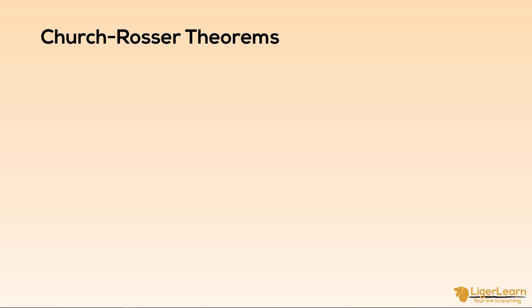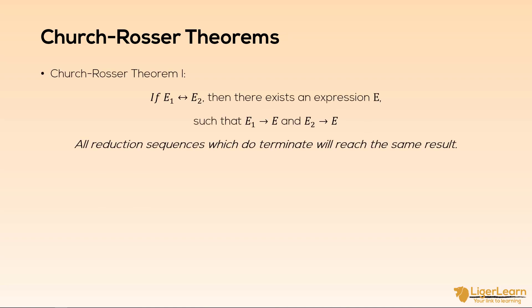There are two Church-Rosser theorems which we will quickly cover. The theorems and their proofs are not really important for us to understand. What is more important is what results as a corollary of the theorems. The first theorem states that if e1 is reducible to e2, then there exists an expression e such that e1 can be reduced to e and e2 can be reduced to e.